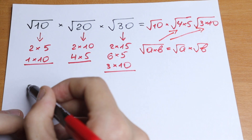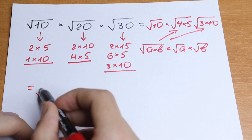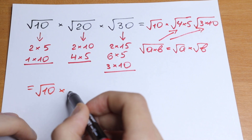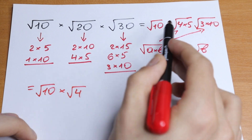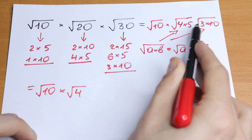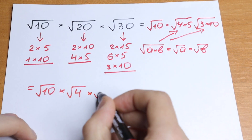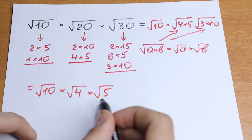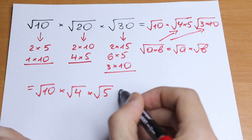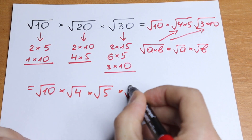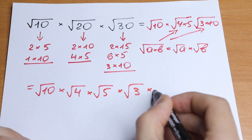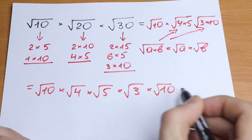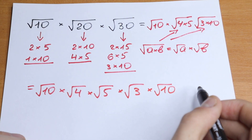Let's apply this rule. As a result, we will have square root of 10 times square root of 4 times square root of 5 — that's our square root of 20 split — and times square root of 3 and times square root of 10. We just used this rule.